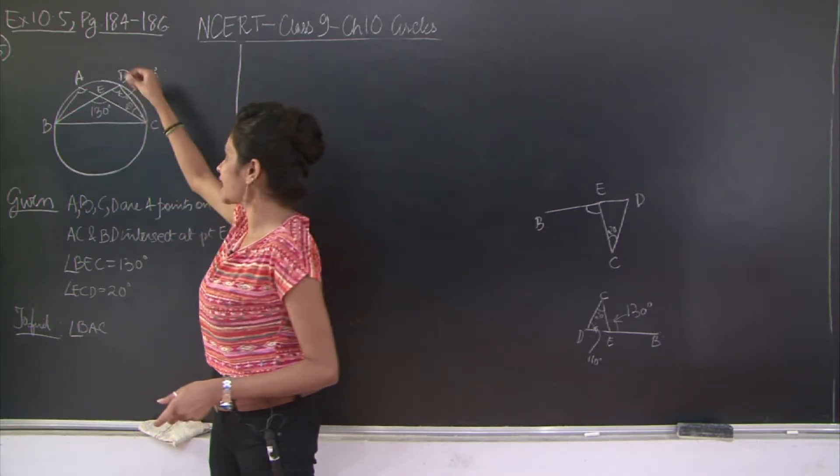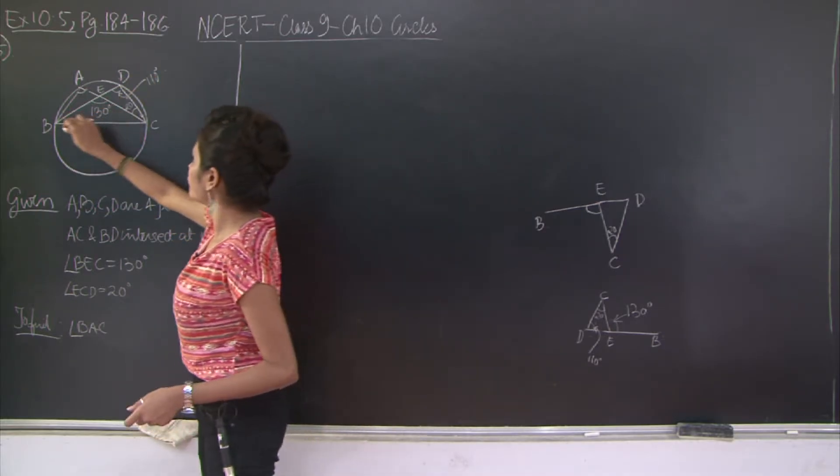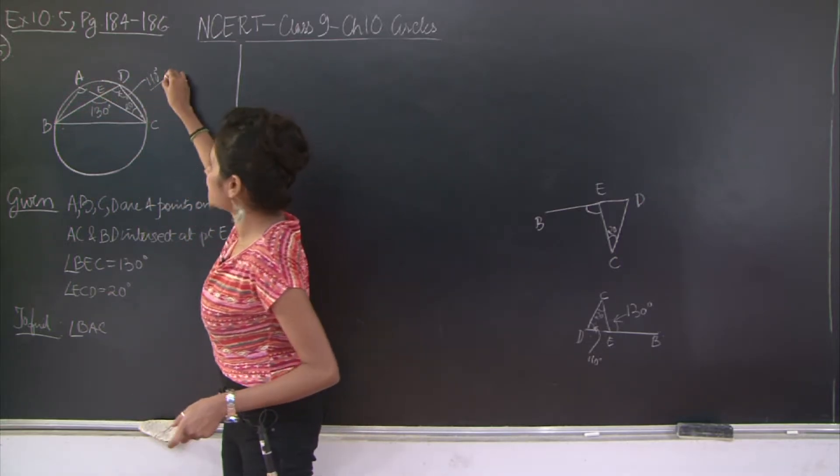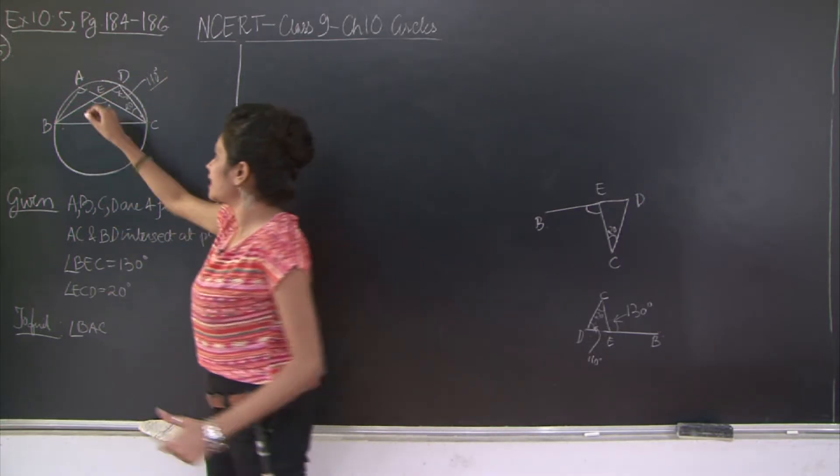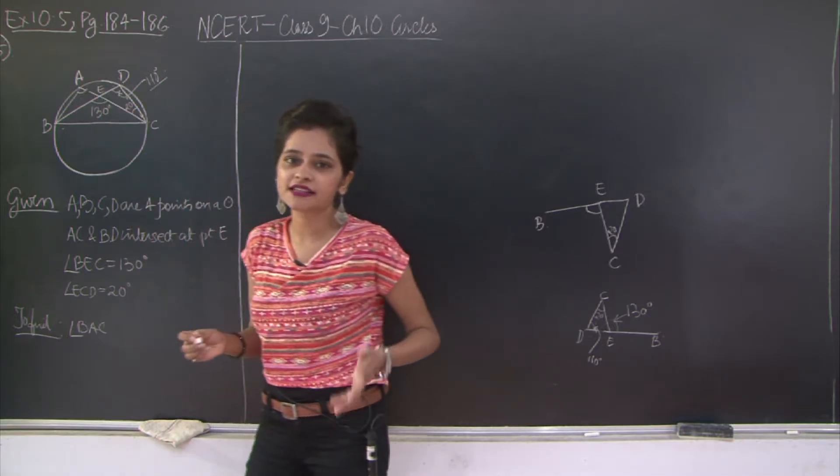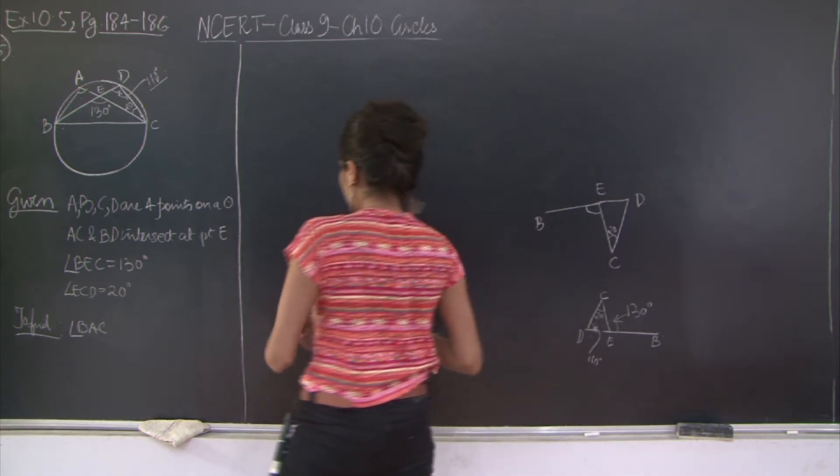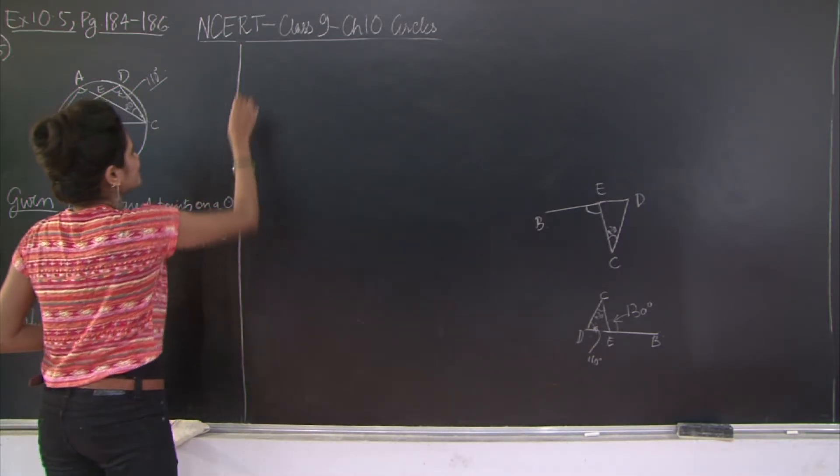Now notice that angle BDC and angle BAC they are subtended by the same chord BC in the same segment BADC. Therefore angle BAC is equal to angle BDC. But BDC is 110. We just found that out. Therefore BAC is going to be, angle BAC is going to be 110 degrees. Very simple.